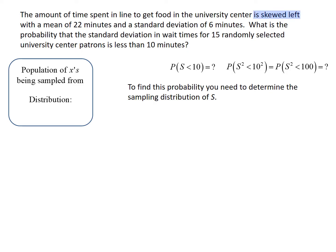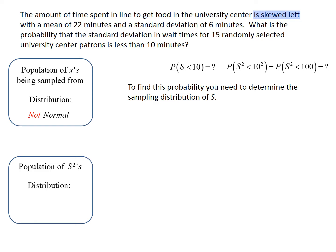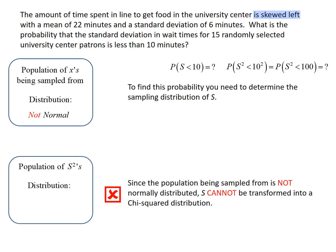The population we're sampling from is skewed left — that is most definitely not normal. For the distribution of s-squared, the population being sampled from had to be normally distributed. So s-squared and therefore s cannot be converted into a chi-squared distribution. The distribution of our sample standard deviation and sample variance are not related to the chi-squared distribution, and we can't find this probability.